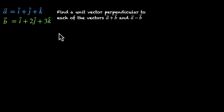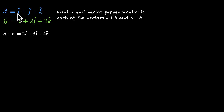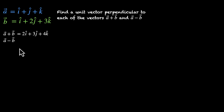So the first step is to find a plus b and a minus b. So a plus b is 1+1=2i-cap, 1+2=3j-cap, 1+3=4k-cap. And a minus b is 0i-cap minus j-cap minus 2k-cap.